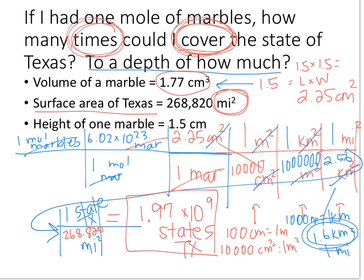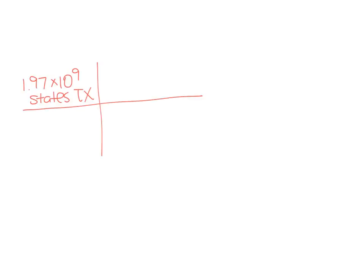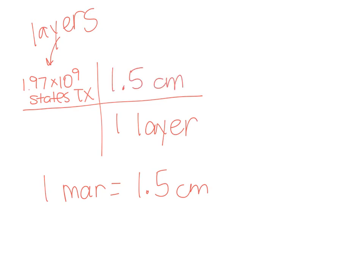So if we did this 1.97 billion times, let's see how deep our stack of marbles would take us. This number up here represents how many times I can cover the state with marbles, or it represents how many layers of marbles we would have. So then we take our other information, which says that one marble has the height of 1.5 centimeters. That means each layer would be 1.5 centimeters thick. We're going to take our huge 1.97 billion number and multiply it by 1.5. We would find out that it's 2.96 billion centimeters thick.